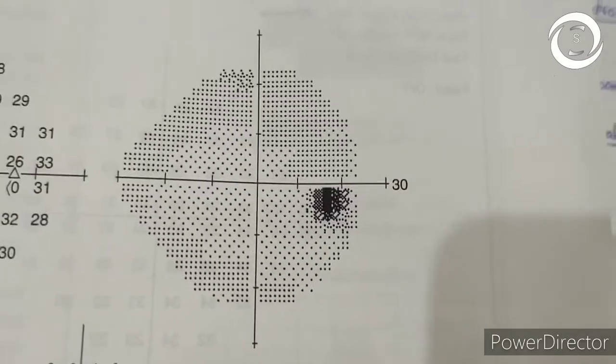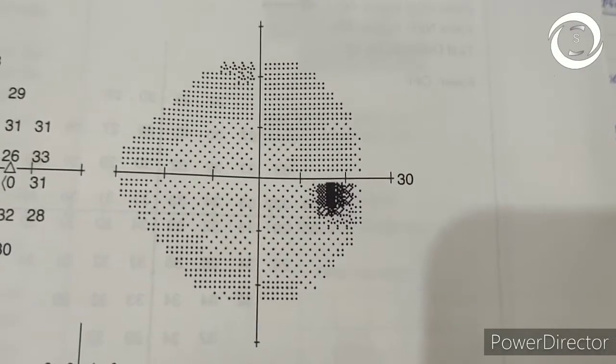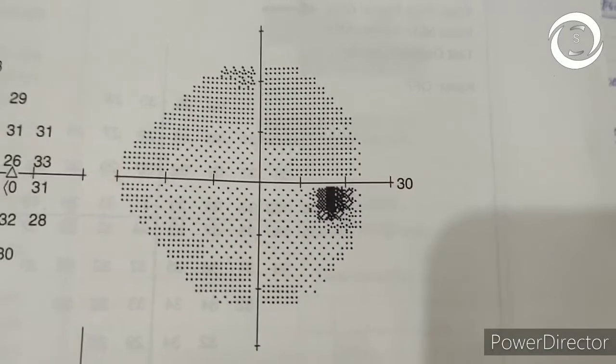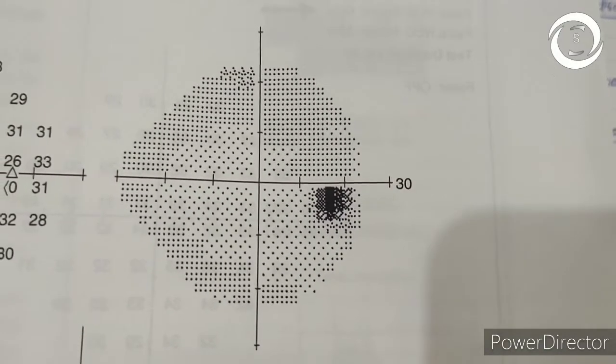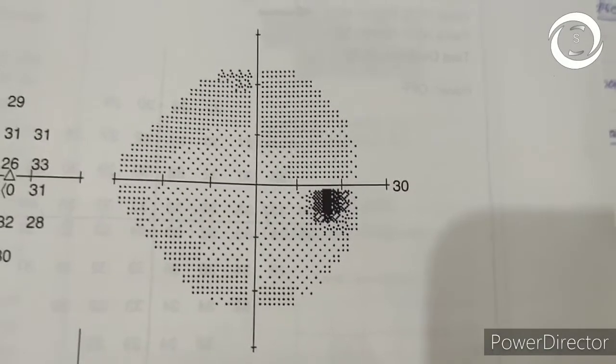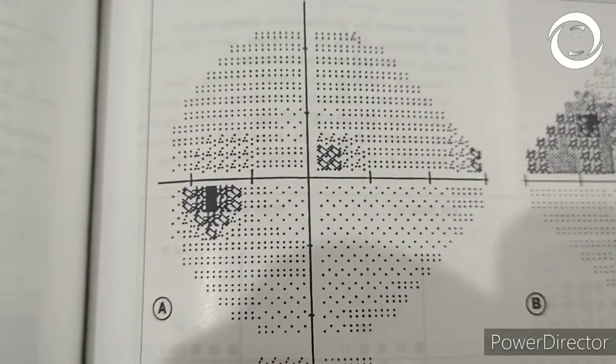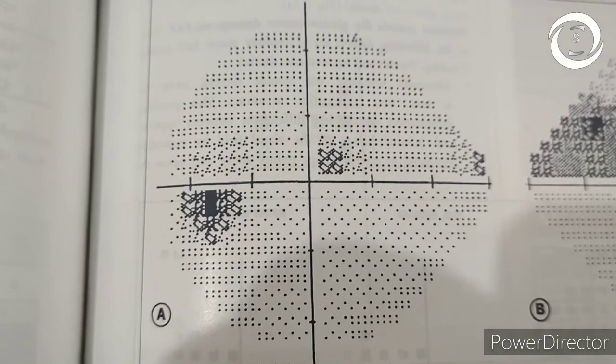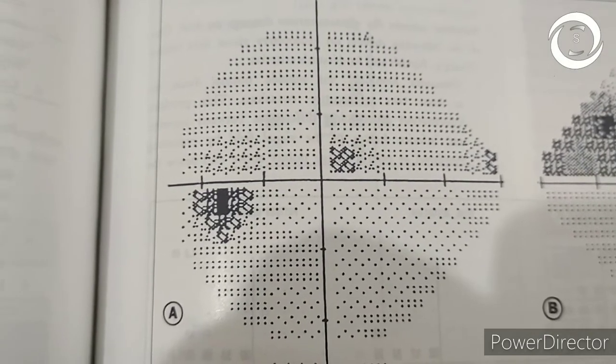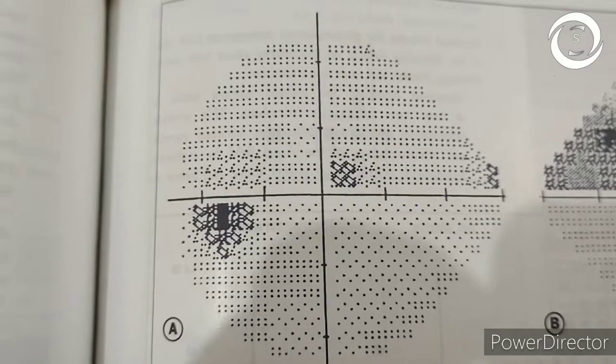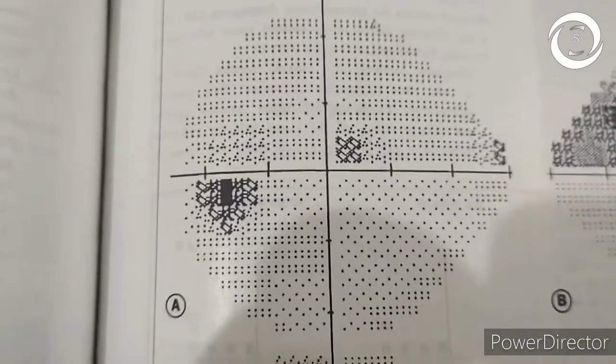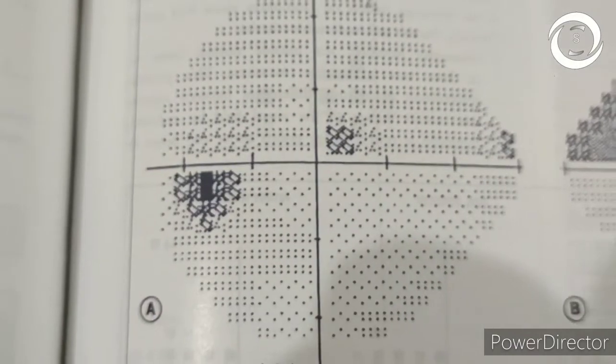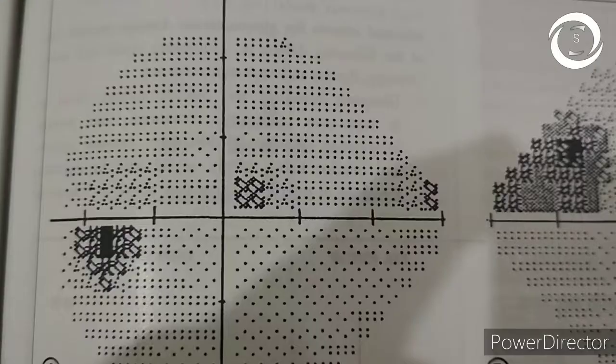The early specific glaucomatous field defects are paracentral scotomas, temporal wedge defect, and nasal step formation. First, look at the paracentral scotoma. Usually it is located in 10 to 20 degrees of visual fields, but here it is superior nasally closer to fixation because the patient had normal tension glaucoma where defects are closer to fixation.